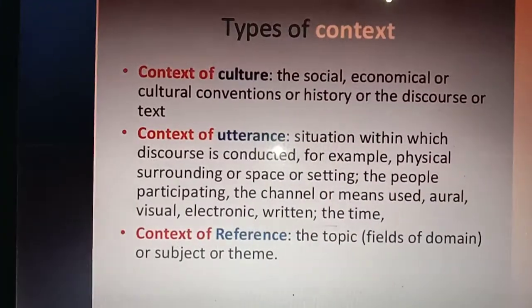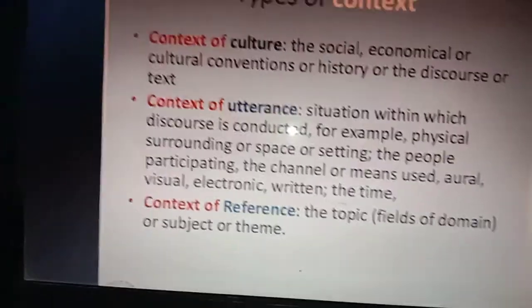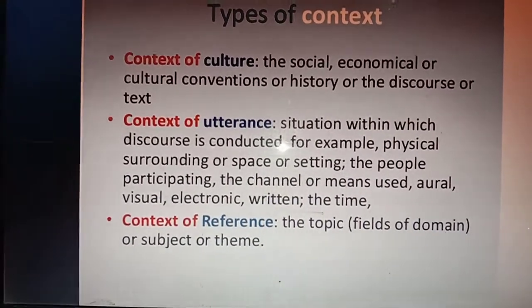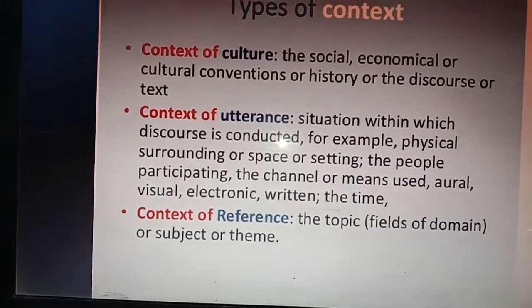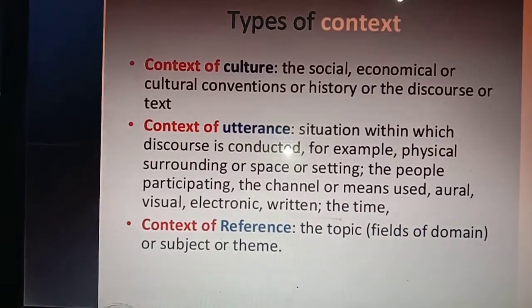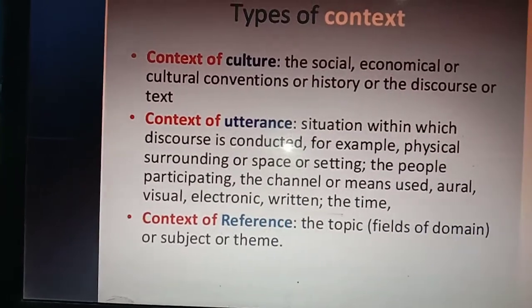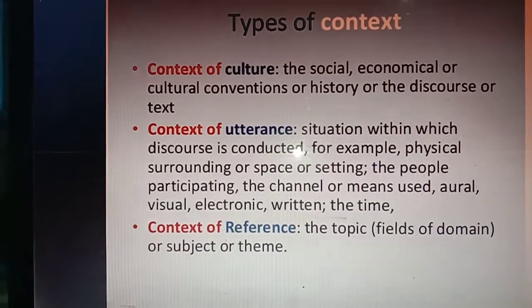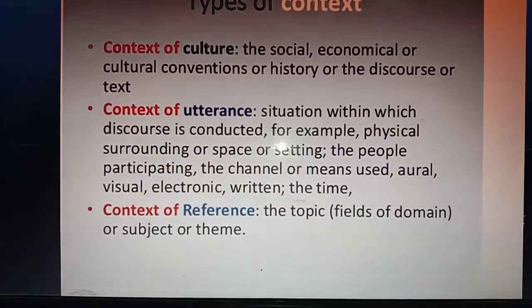There are three types of context: context of culture, context of utterance, and context of reference. Context of culture relates to the social, economic, or cultural conventions or history of the discourse or text. Context of utterance is the situation within which discourse is conducted — for example, physical surroundings or setting, the people participating, the channel (oral, visual, electronic, written), and the time. Context of reference relates to the topic, field, domain, or subject or theme.